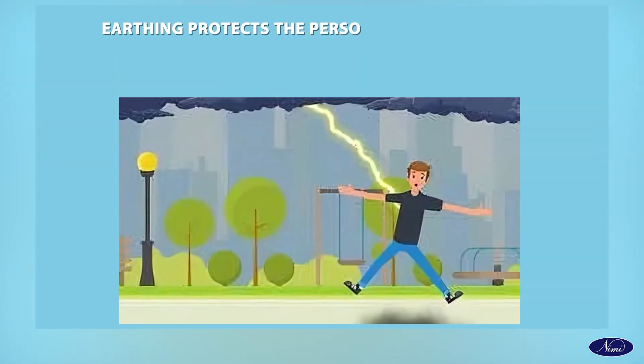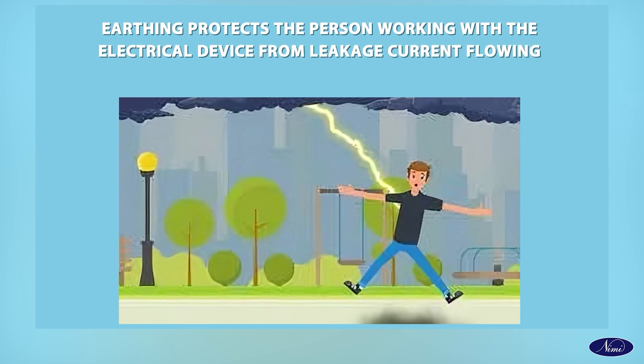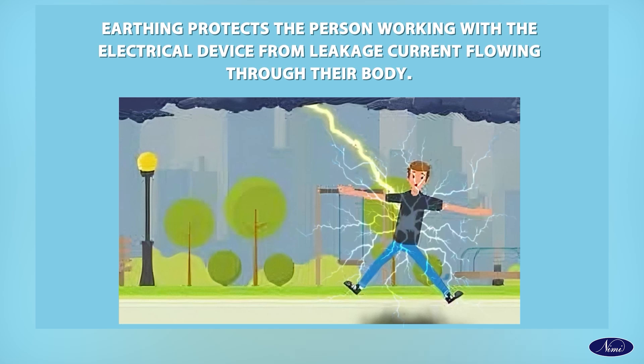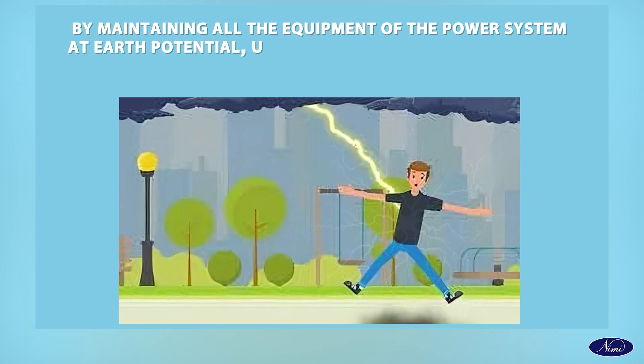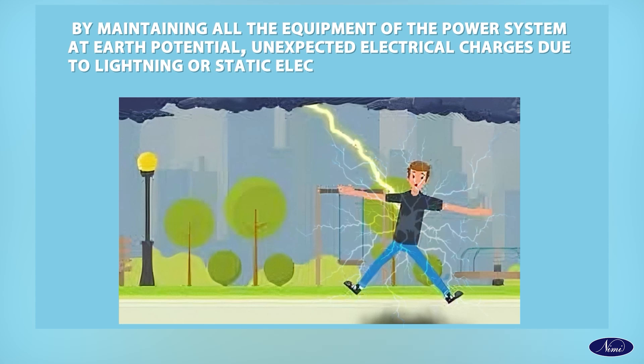Earthing protects the person working with the electrical device from leakage current flowing through their body. By maintaining all the equipment of the power system at Earth potential, unexpected electrical charges due to lightning or static electricity are dissipated to the Earth through earthing, thus protecting the system.